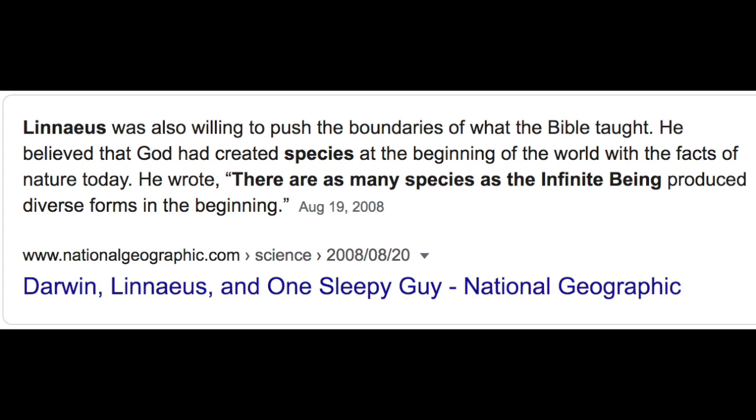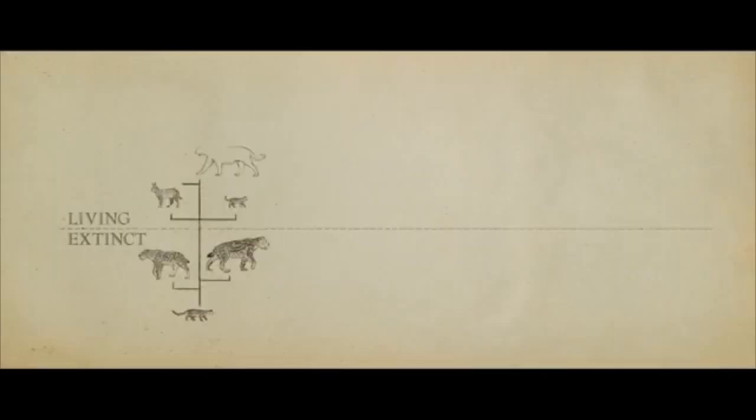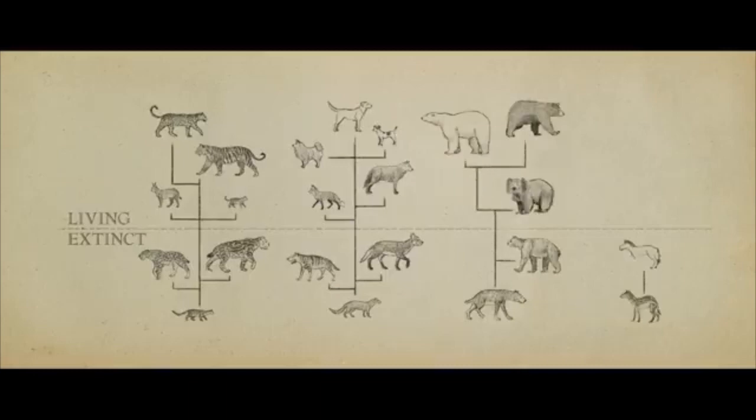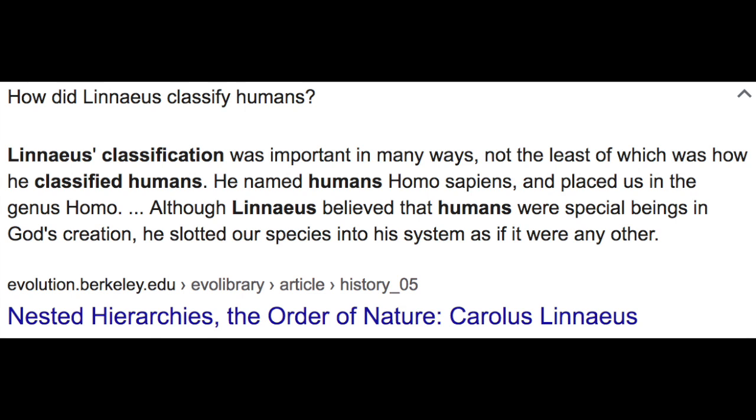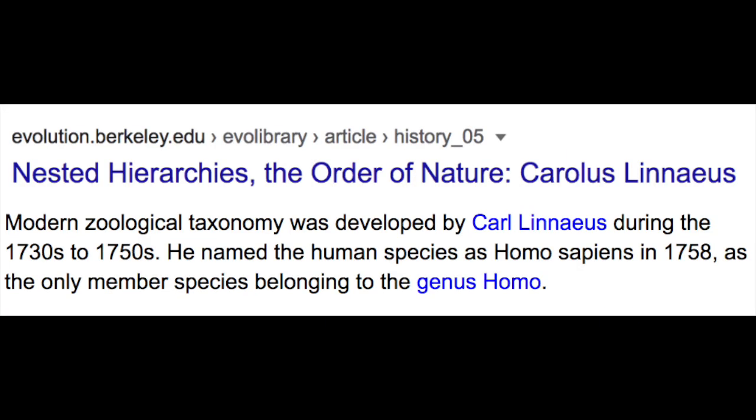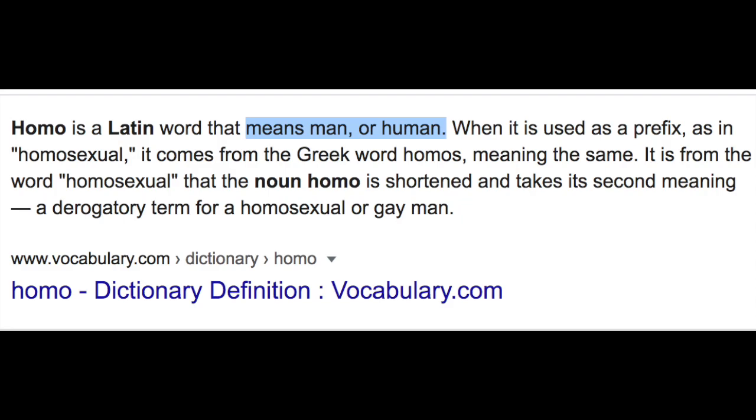Carl Linnaeus, the father of taxonomy, believed that he was God's chosen instrument for revealing, in a precise way, the divinely ordered work of creation. As a creationist, he initially shared the then-prevalent view that each species had originally been specially created by God. In his book, he wrote, there are as many species as the infinite being produced diverse forms in the beginning. Here's a cool fact: Linnaeus did not believe in evolution, just variation within major groups, which is what creationists accept today. In his lifetime, he was called the second Adam, because the first Adam named all the animals and Linnaeus came along and renamed them in Latin.